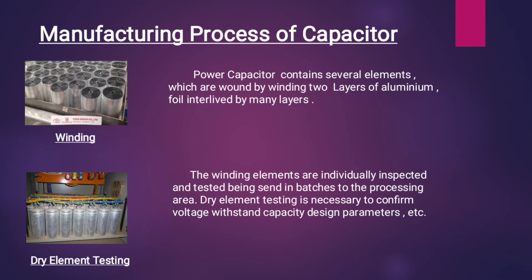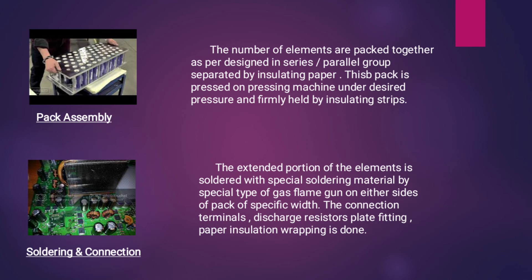The manufacturing process of capacitors begins with winding. A power capacitor contains several elements wound in multiple layers, as seen in the picture. Next is dry element testing — the winding elements are individually inspected and tested before being sent in batches to the processing area, to confirm voltage stand capacity and design parameters. In pack assembly, the elements are packed together as per design in series or parallel groups, separated by insulating paper.